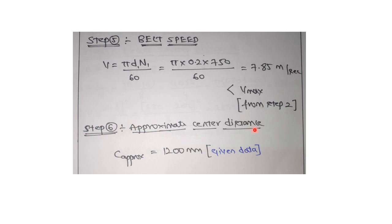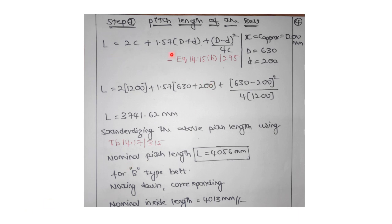Step 6: the center distance given in the problem is taken as the approximate center distance (C_approx = 1.2 m). Using equation 14.15 from page 295, substitute all values to calculate the pitch length, which gives 3741.62 mm. Standardize this from table 14.17 (page 315) under B belt — the standardized pitch length is 4056 mm. Note the corresponding nominal inside length, which is 4013 mm.